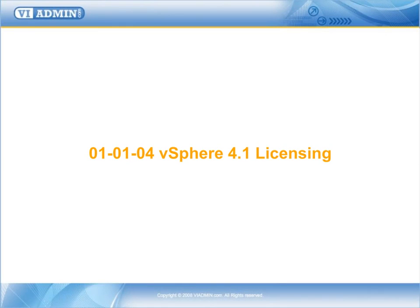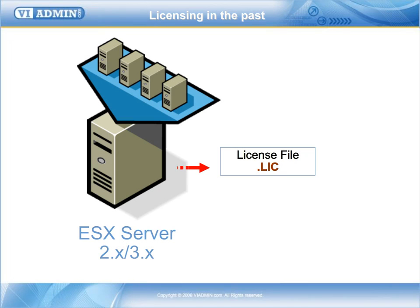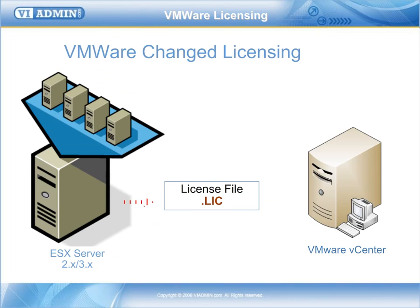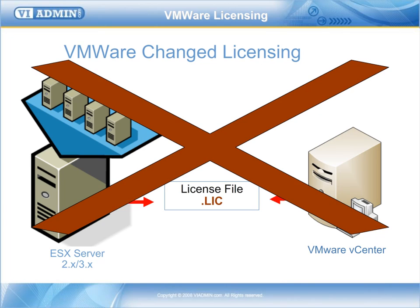In previous versions of ESX server like 2.5, 3.0, and 3.5, there were two ways to license your ESX server. The two different modes of licensing were called host-based and server-based. There used to be a license file with an LIC extension that was installed on the licensed server, and vCenter used to read the licenses off of that Flex license server. That's not the case anymore. Now with vSphere, there's a new way of licensing your ESX servers and vCenter server.